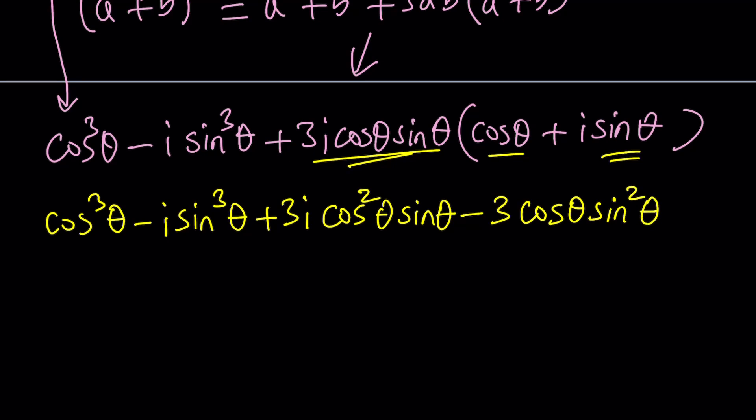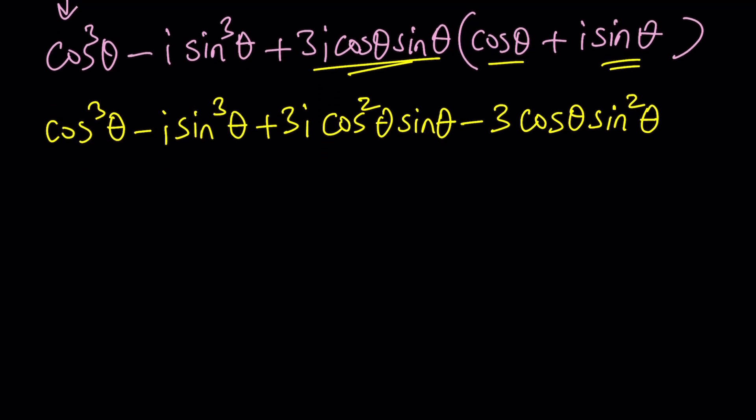There's no I because I squared disappeared like it became negative 1. So how do we simplify this?